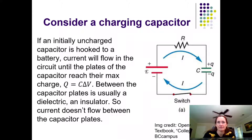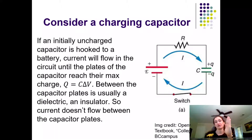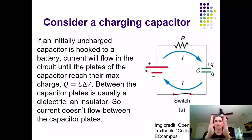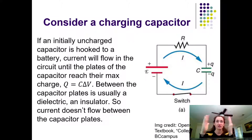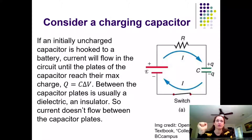Thinking about what's going on between the plates of a parallel plate capacitor: there is no current flowing between the plates. Current flows up to the positive plate and away from the negative plate, but not between them, because between the plates you have either a vacuum or a dielectric — and dielectrics are insulators, so the capacitor doesn't short out.